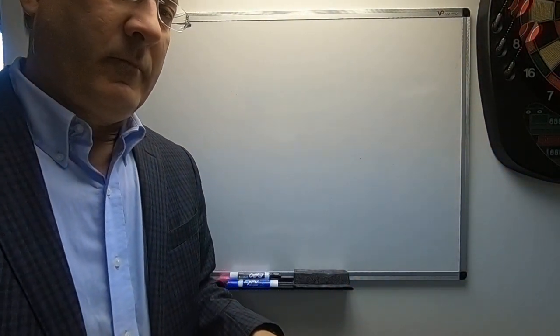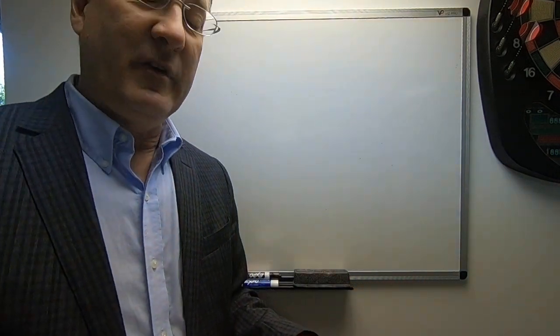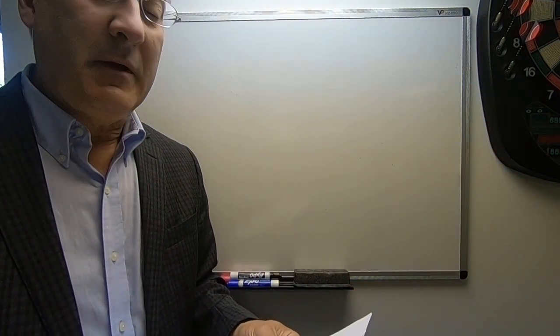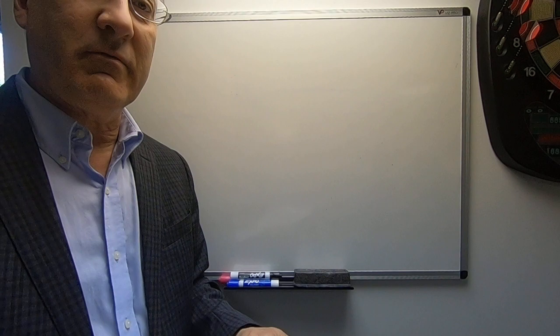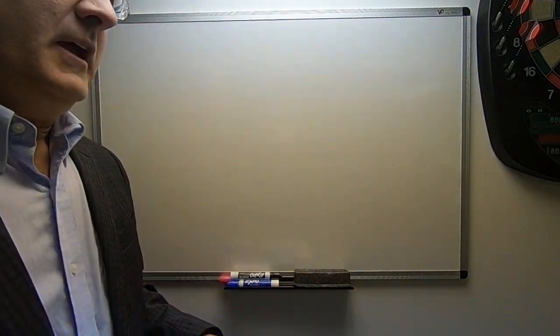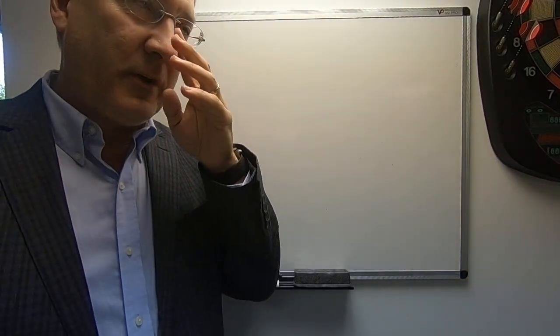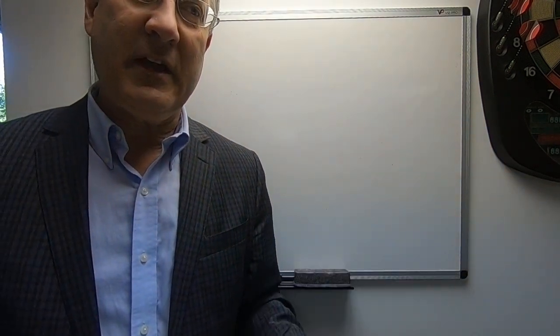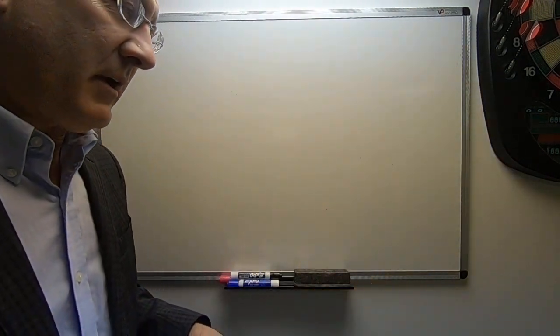We're going to work on a homework problem from chapter three. Chapter three is the accounting information system. During our lecture, we talked about the three steps covered in this chapter: preparing journal entries, posting to T accounts, and preparing a trial balance. That's what this problem is going to be.